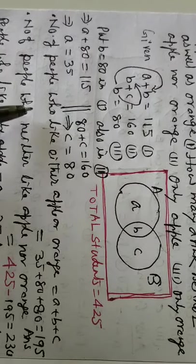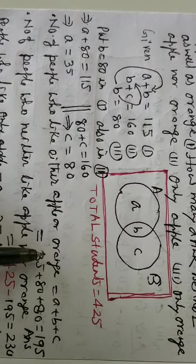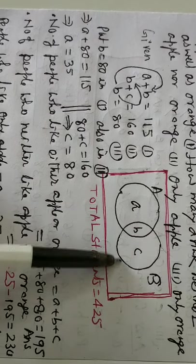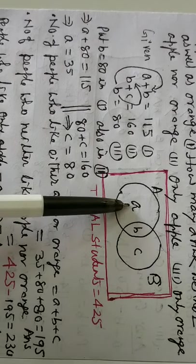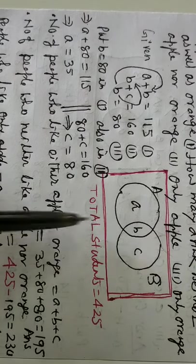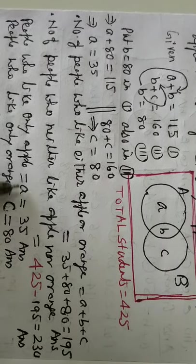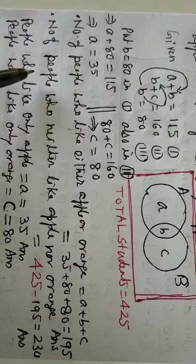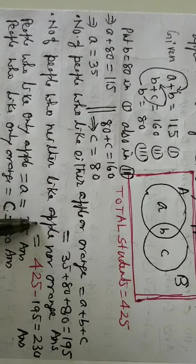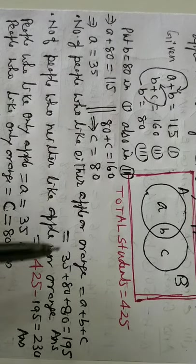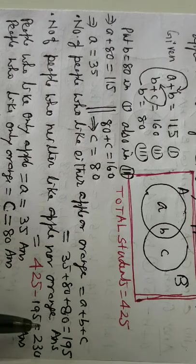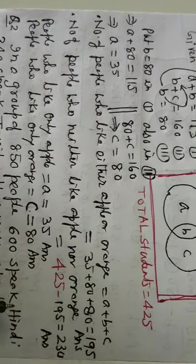C is 80. Now the number of people who like either apple or orange, A, B, C, these are the people who are liking all kind of fruits. This is 195. Now people, number of people who like neither apple nor orange, total 425 minus 195. So this is 230.